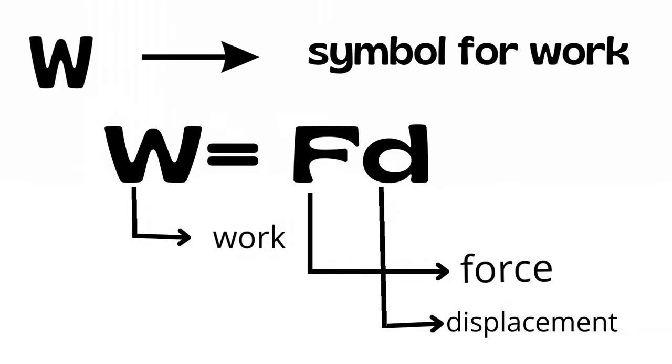The symbol for work is a capital W. The work done by a force can be calculated as W equals F times d. Where W is for work, F is for the force applied to the object, and d is for displacement.